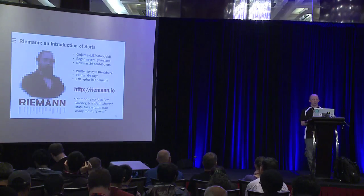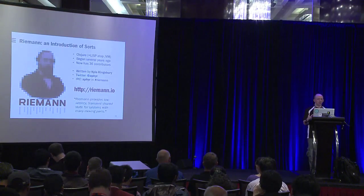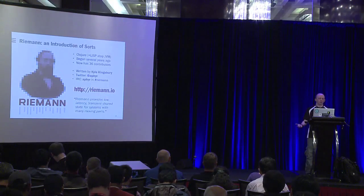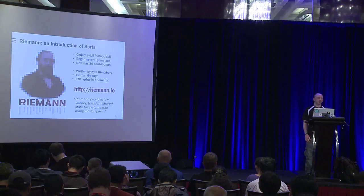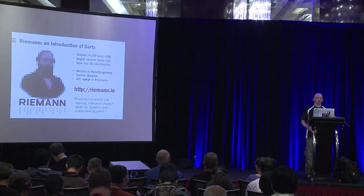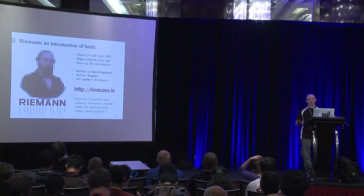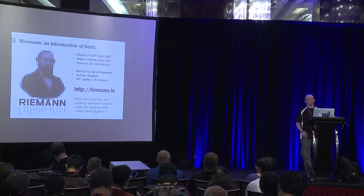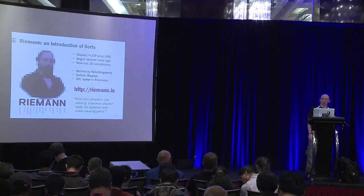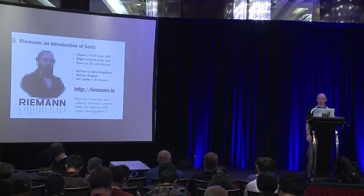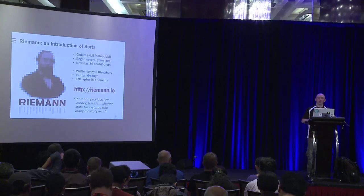A good overall statement of what Riemann is as a product: it's a low-latency transient shared state for systems with many moving parts. I usually describe it as an in-memory time series database — a moving window in time. It's not meant to do any back-end storage; it passes that off to other systems. For instance, you can have it pass all its data into Graphite, and you can also use Riemann's API to pull data out of the Graphite Whisper files. So it works both ways.